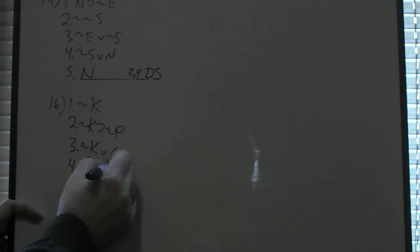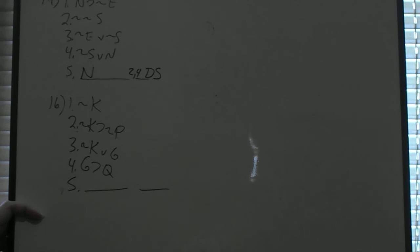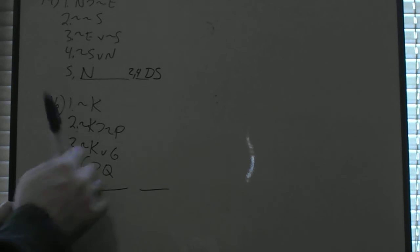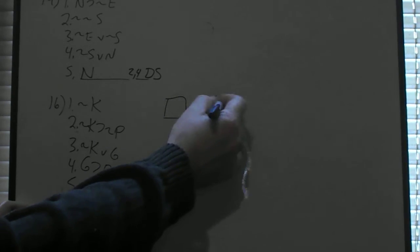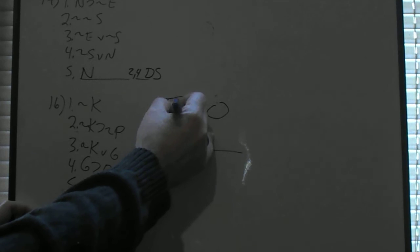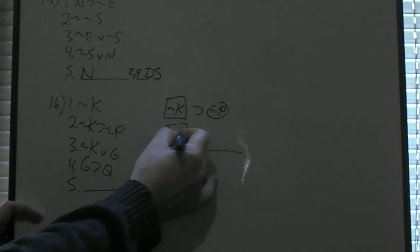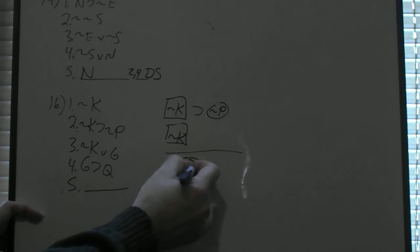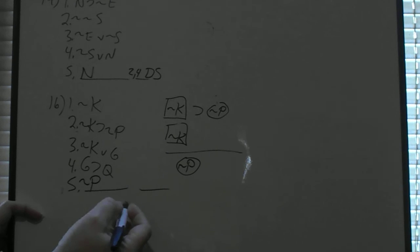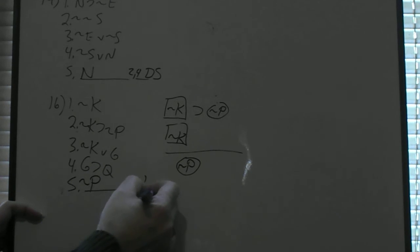For number 16, we have 'not K,' 'not K then not P,' 'not K or G,' and 'G then Q.' The obvious solution is lines 1 and 2 as a modus ponens: if square then circle, square therefore circle — 'not K then not P,' 'not K,' therefore 'not P.' That comes from lines 1 and 2 through modus ponens.